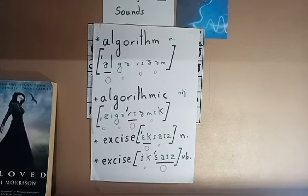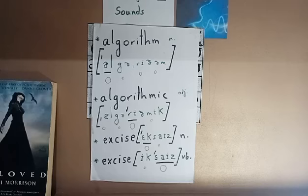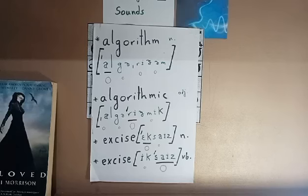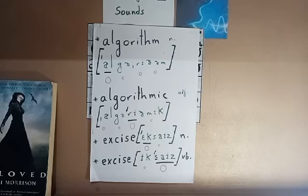Hi, in this video I'm going to showcase how to pronounce and utter these four words. The first word is 'algorithm,' the second word is 'algorithmic,' the third word is 'excise' as a noun, and the last word is 'excise' as a verb. Let's start with the first word, which is a trendy word — algorithm. As a noun, an algorithm is...